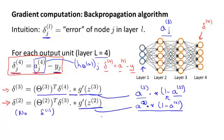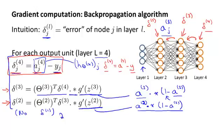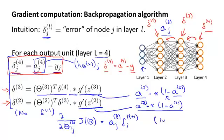The name backpropagation comes from the fact that we start by computing the delta term for the output layer, and then we go back a layer and compute the delta terms for the third hidden layer, and then we go back another step to compute delta two. So we're sort of backpropagating the errors from the output layer to layer three to layer two, hence the name backpropagation. The derivation is surprisingly complicated, but if you just do these few steps of computation, it's possible to prove via a somewhat complicated mathematical proof that if you ignore regularization, then the partial derivative terms you want are exactly given by the activations and these delta terms. This is ignoring lambda, or if the regularization term lambda were equal to zero.